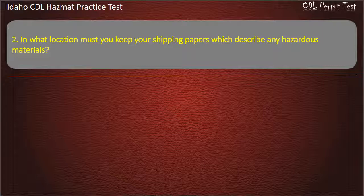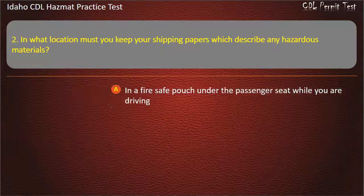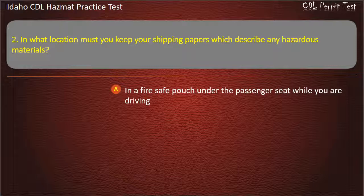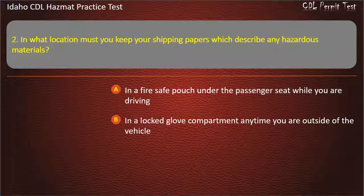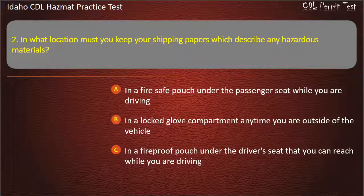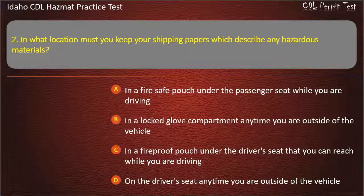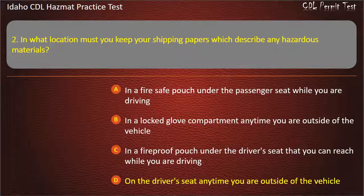Question 2. In what location must you keep your shipping papers which describe any hazardous materials? In a fire-safe pouch under the passenger seat while you are driving. In a locked glove compartment anytime you are outside of the vehicle. In a fireproof pouch under the driver's seat that you can reach while you are driving. On the driver's seat anytime you are outside of the vehicle. Answer: On the driver's seat anytime you are outside of the vehicle.